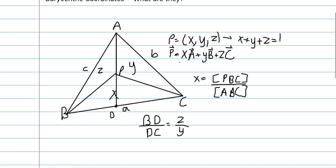Sometimes we will use vectors in these problems. We'll say that the vector of P is equal to x times the vector to A plus y times the vector to B plus z times the vector to C. Essentially, for some arbitrary origin, P is just some coordinate expressed in terms of sort of unit vectors A, B, and C.